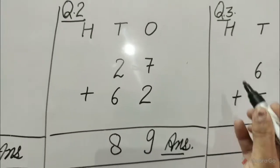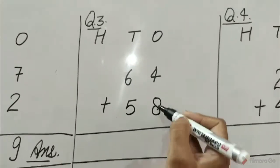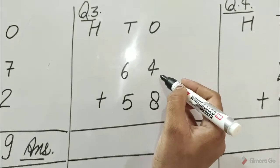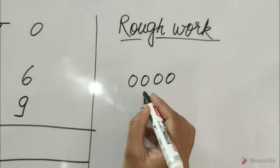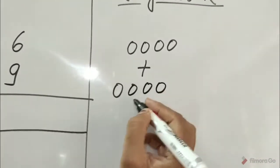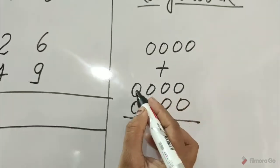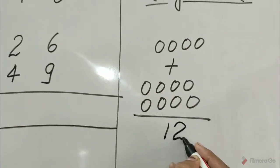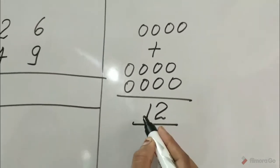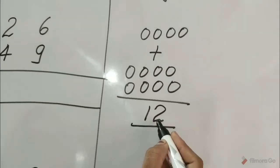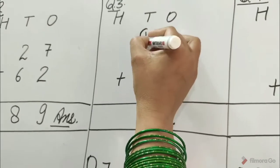Question number 3 is 64 plus 58. We add ones first: 8 ones plus 4 ones. Here we need to do rough work. Draw 4 circles for 4 ones and 8 circles for 8 ones. Count all together: 1, 2, 3, 4, 5, 6, 7, 8, 9, 10, 11, 12. It is 12. Now 12 has 1 ten and 2 ones. Write down 2 under the ones and 1 carrying over at the tens.